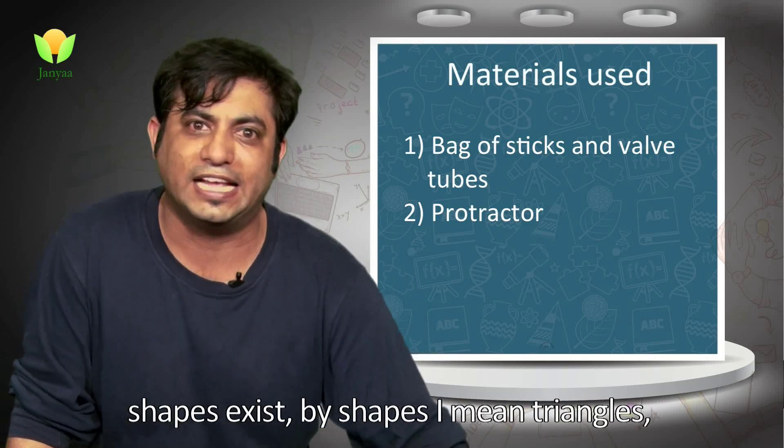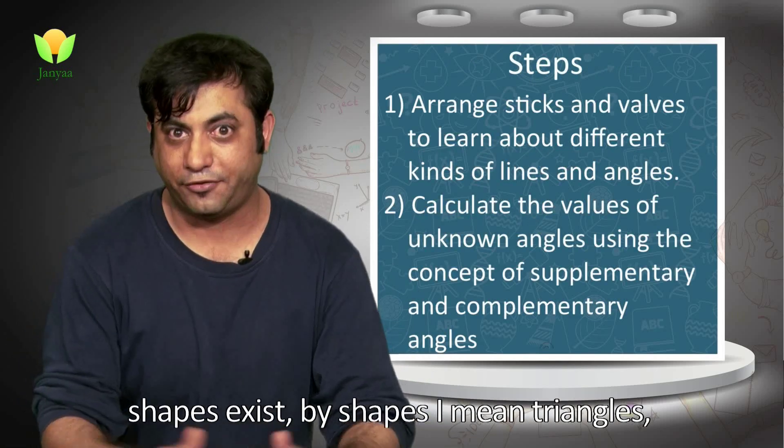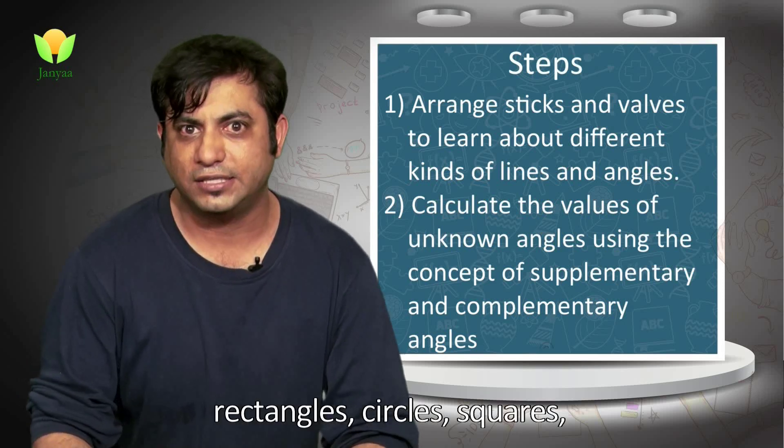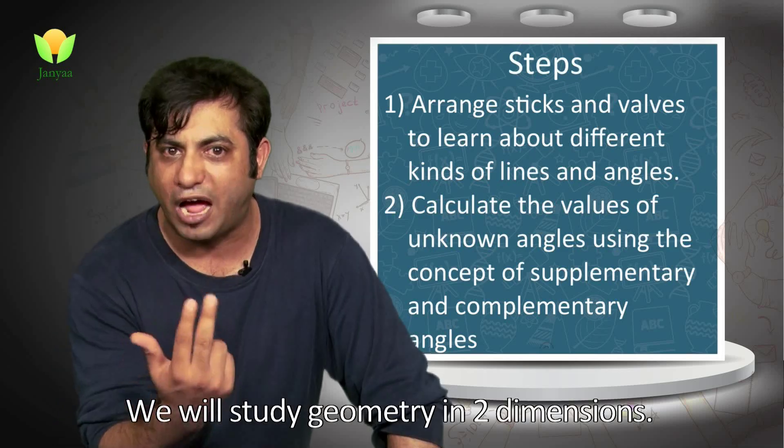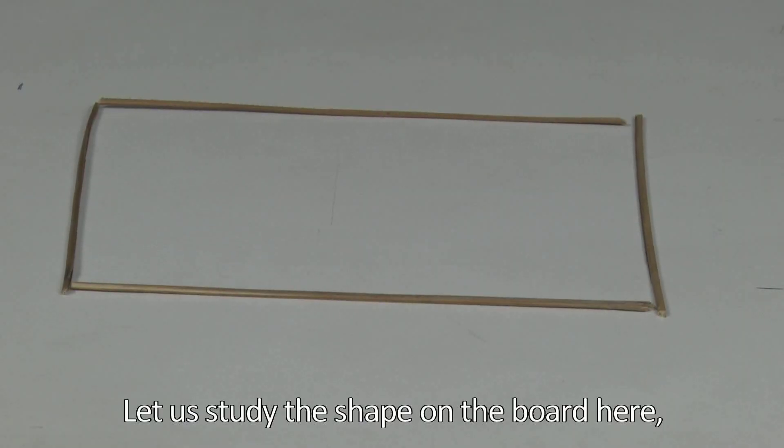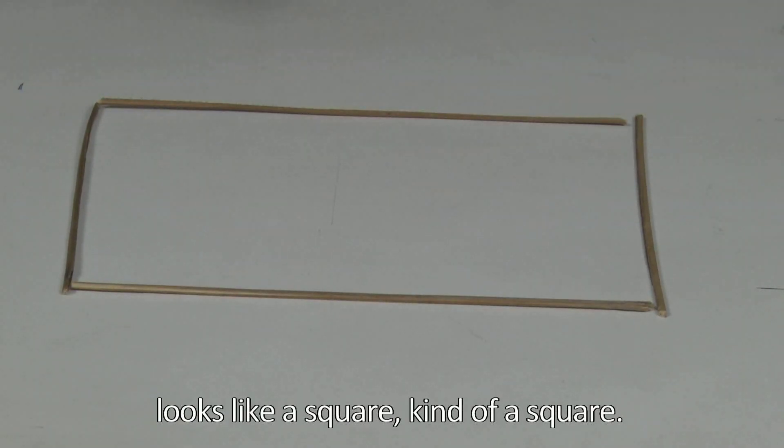By shapes, I mean triangles, rectangles, squares, circles—you have them everywhere, right? We will study geometry in two dimensions. Let's look at the shape on the board here. It's a square, kind of a square.